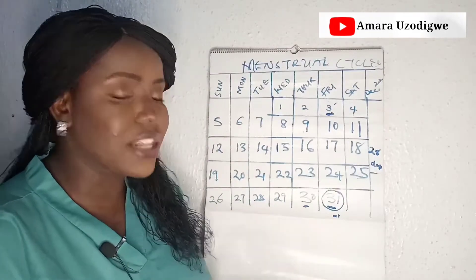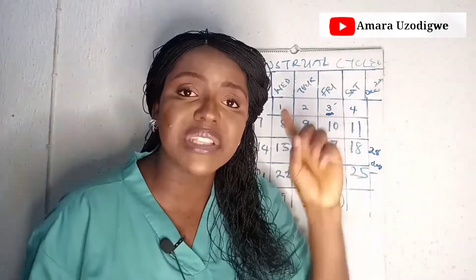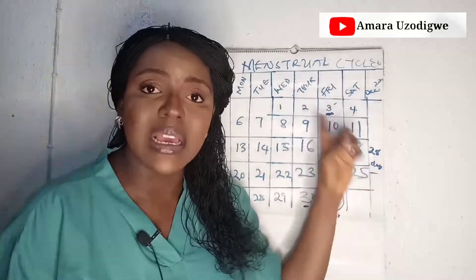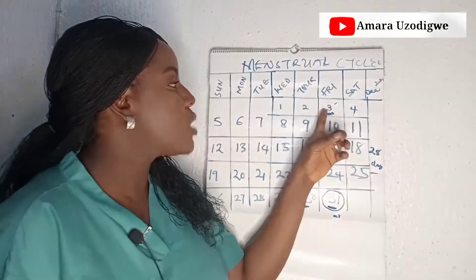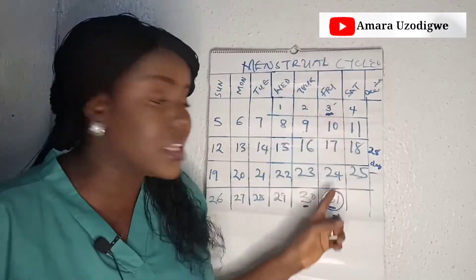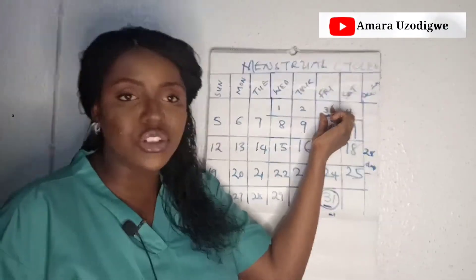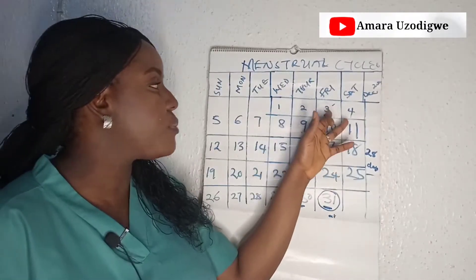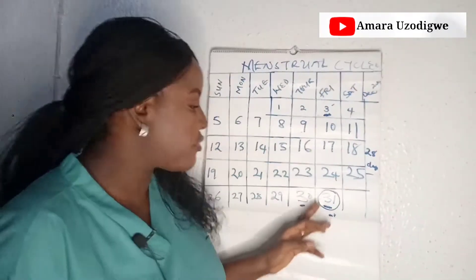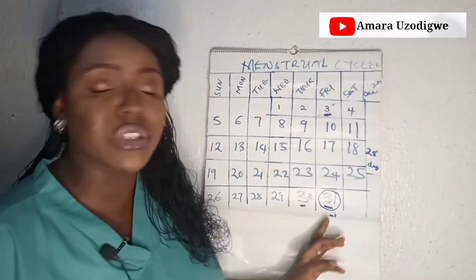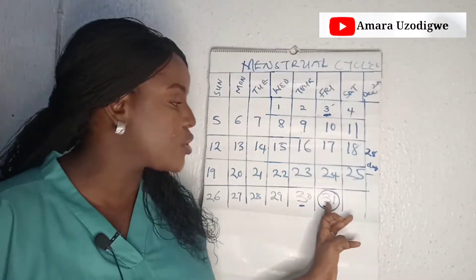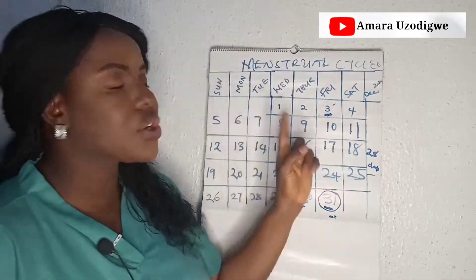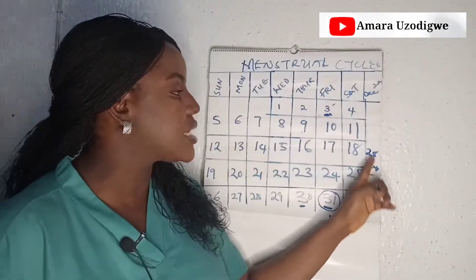The first day that you saw blood stain on your underwear is the first day you start to count. Then you count up to the next period. So your period starts on the 3rd and the next one starts on the 31st — if you count from the 3rd to the day before the 31st, that is how you count it. Each month after counting, write down how many days you had.